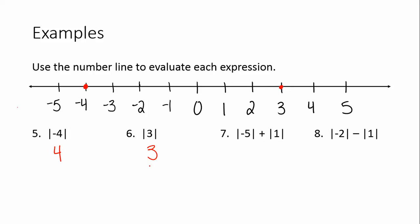Number 7 says the absolute value of 5 plus the absolute value of 1. The absolute value of 5 is 5, and the absolute value of 1 is 1. So when we add 5 plus 1, we get 6.